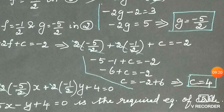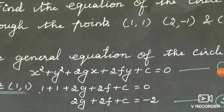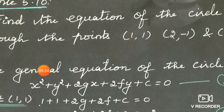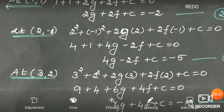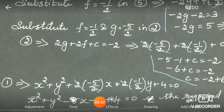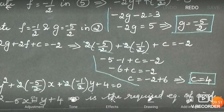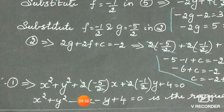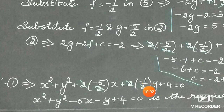We have obtained f = -1/2, g = -5/2, and c = 4. We assumed the general equation of the circle x² + y² + 2gx + 2fy + c = 0, where g, f, c were the unknowns. Now substituting these values: x² + y² - 5x - y + 4 = 0, which is the required equation of the circle. Thank you children.